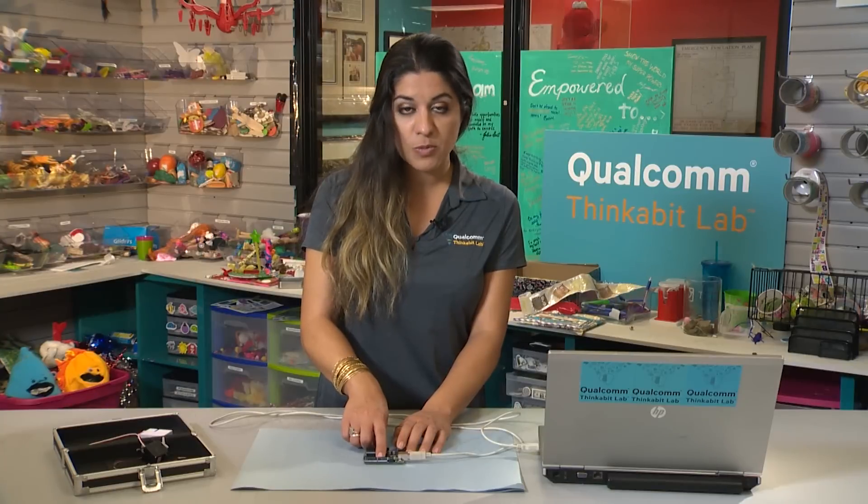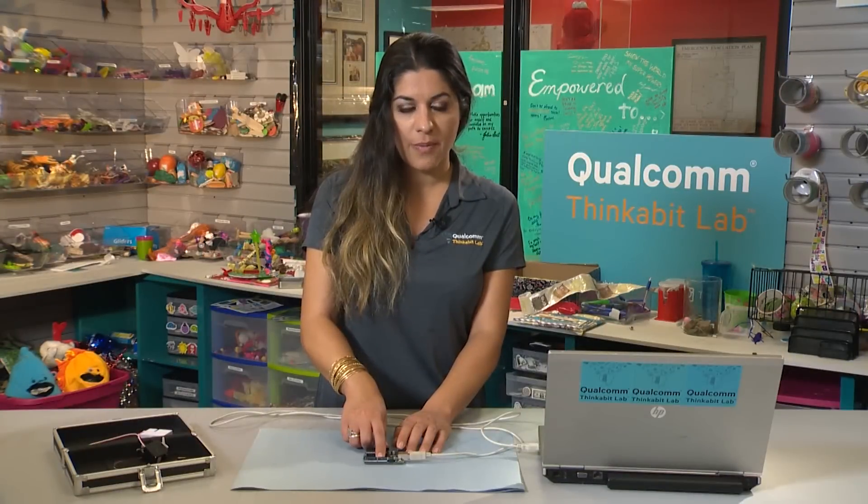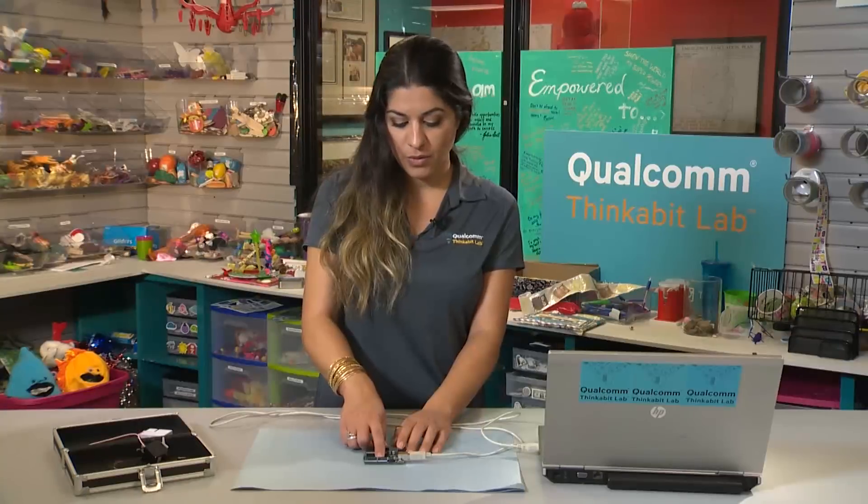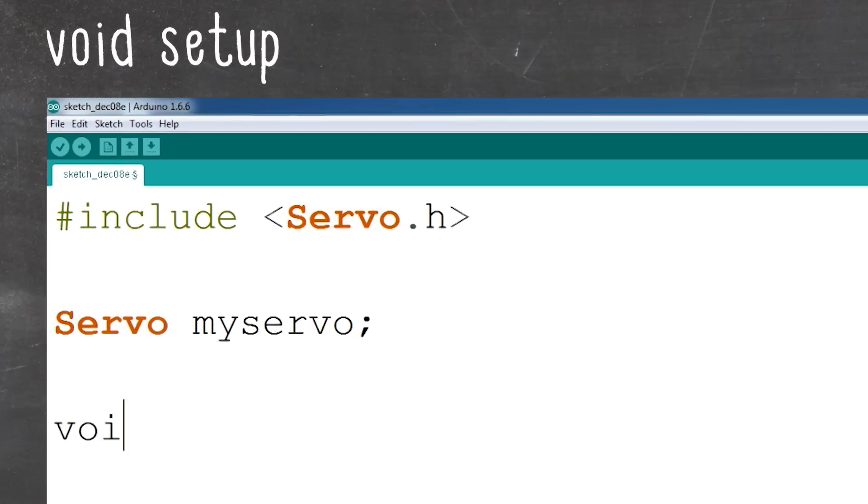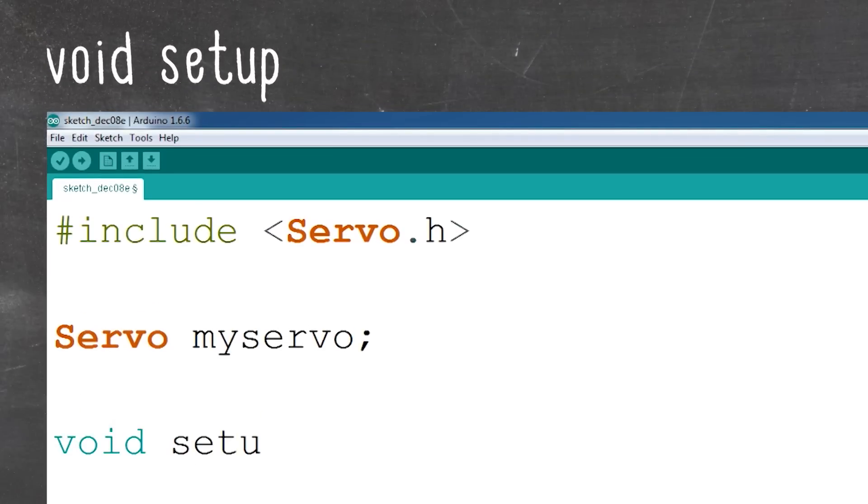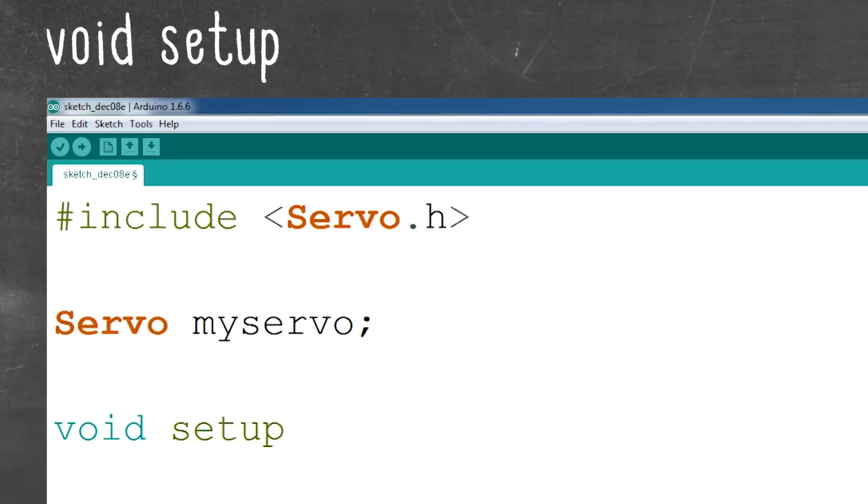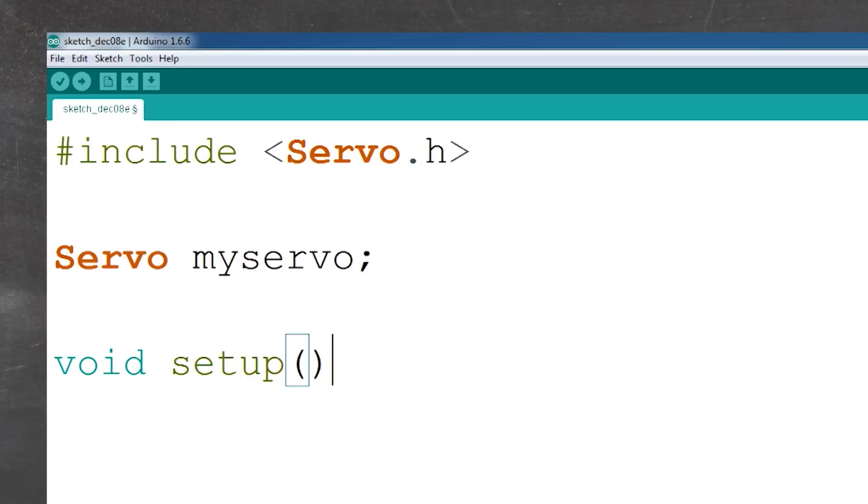That means those pins can actually generate the PWM that the servo needs to move. We're going to use pin 9. In our void setup, this is where we can actually set up the hardware of our Arduino. So void setup, all lowercase, open close parentheses, open bracket.